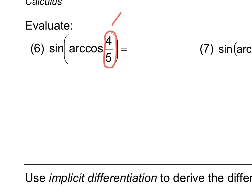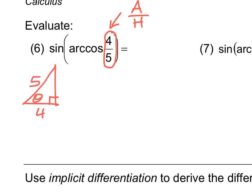The cosine ratio, thinking of SOH-CAH-TOA, is adjacent over hypotenuse. I'm going to draw a right triangle, put in a theta as a reference angle, and indicate that the adjacent side is 4 and the hypotenuse is 5. Back to algebra one — the missing side is 3. A little Pythagorean triple action going on there.